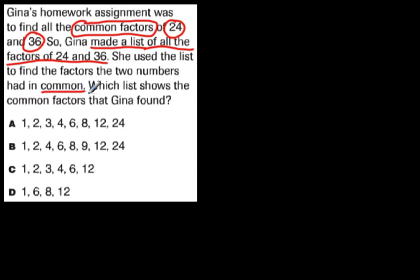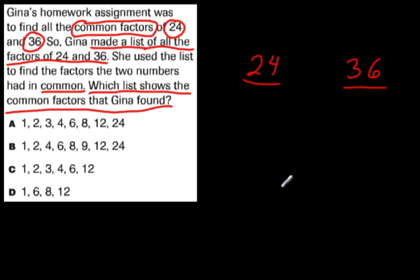Here's the question. Which list shows the common factors that Gina found? So this is a multiple choice question. They've already got the options there for you. Now, what you're going to want to go ahead and do is write the number 24 and the number 36. And you want to write all the factors of each number and circle the ones that are in common. Let's do this one together. You can try the next one on your own.